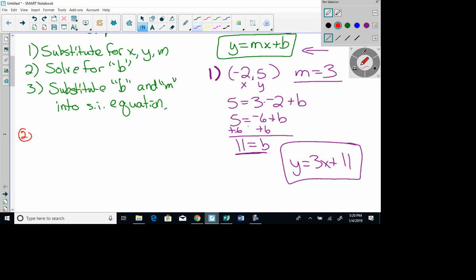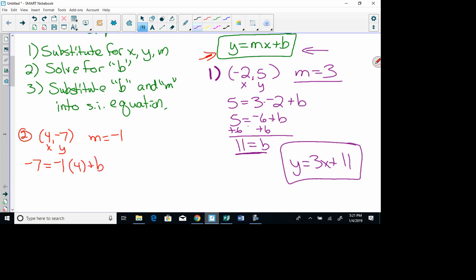So number 2, I have the point 4, negative 7, and my slope is negative 1. Step 1 says substitute for x, y, and m. So again, I'm going to use this equation right here, and I'm going to substitute negative 7 in for y. m is negative 1, x is 4, and I do not know what b is. Step 2 says I solve for b. Negative 7 equals negative 4 plus b. I add 4 to each side, and I get b equals negative 3.